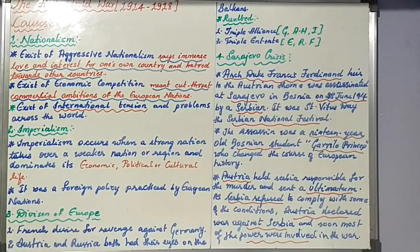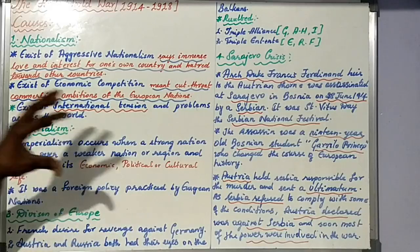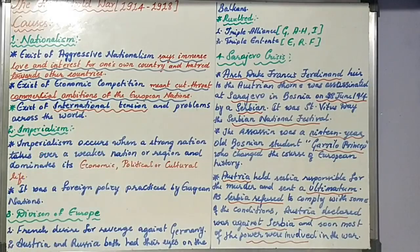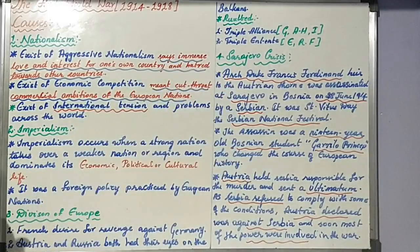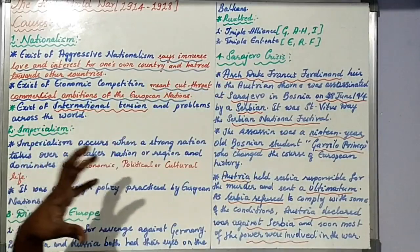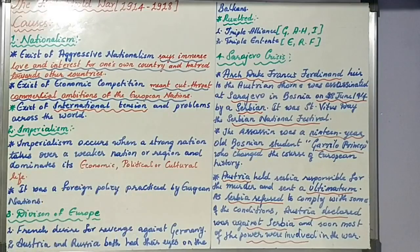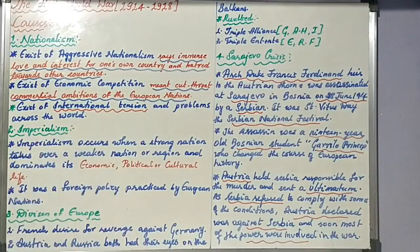We are not talking about the course of the war. For causes, there are many, but we are covering only four major causes: nationalism, imperialism, division of Europe, and the Sarajevo Crisis. The remaining causes are not in this year's syllabus. Next class we will study the results of the First World War, then move to the Second World War.